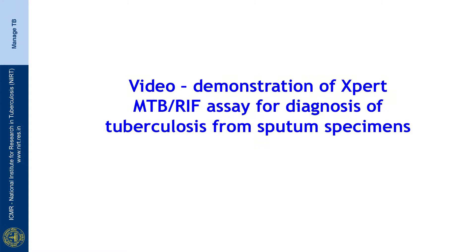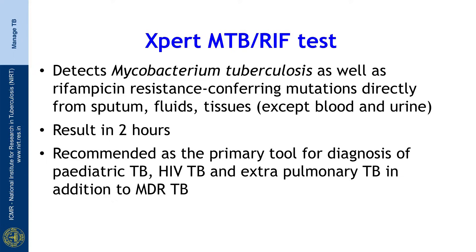Welcome to this video demonstration of Expert MTB-RIF assay for diagnosis of tuberculosis from sputum specimens. Expert MTB-RIF test detects Mycobacterium tuberculosis as well as rifampicin resistance-conferring mutations directly from sputum, body fluids and tissues except blood and urine. The results are available in 2 hours.